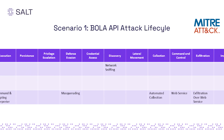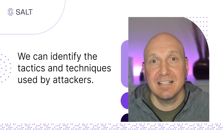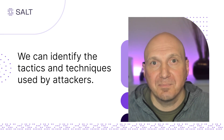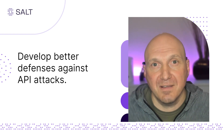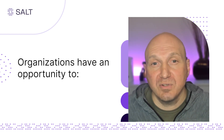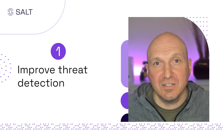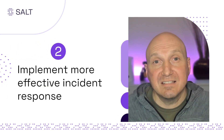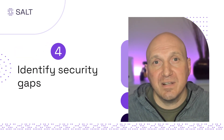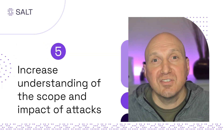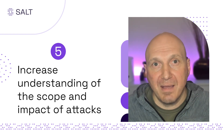By mapping the framework to API security attacks, we can identify the tactics and techniques used by attackers. This can help us identify vulnerabilities in our own systems and develop better API defenses. By recognizing the relationships between MITRE ATT&CK TTPs and behaviors of cyber criminals during their API attack campaigns, organizations have an opportunity to improve threat detection, implement more effective incident response, allocate security resources more effectively, identify security gaps, and increase understanding of the scope of an attack and its potential impact.